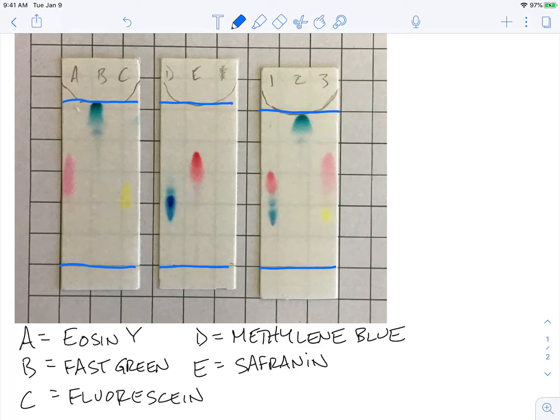Now one of the pieces of analysis that you would do typically in a lab like this is calculate an RF value. So you would take the distance traveled by your sample and divide it by the distance traveled by the solvent front, or you might say the distance traveled by the mobile phase or your eluent.